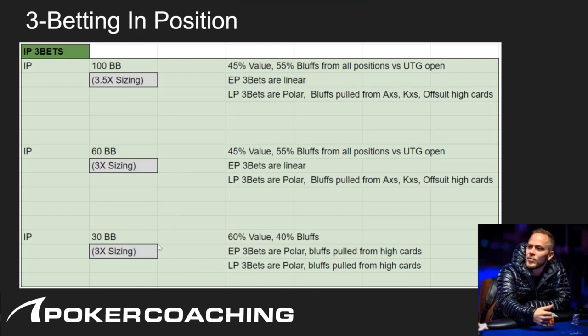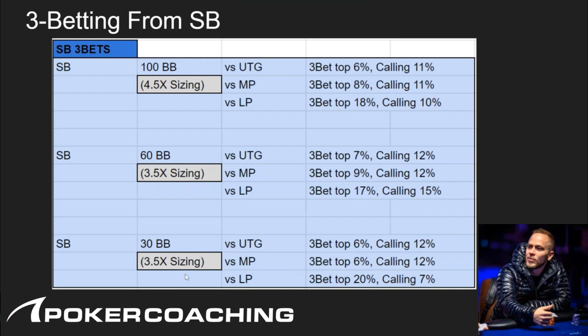We do less bluffing as stack size decreases — we can't bluff as much because it opens the door to getting four-bet shoved on a lot, so we need more value. This mirrors post-flop poker theory: when you play deeper stacks you get to have more bluffs on early streets because of the leverage you have across four streets. When short-stacked you don't have that leverage and need more value in your re-raising range. At 30 big blinds, both EP and LP three-bets are polar with bluffs pulled from high cards.